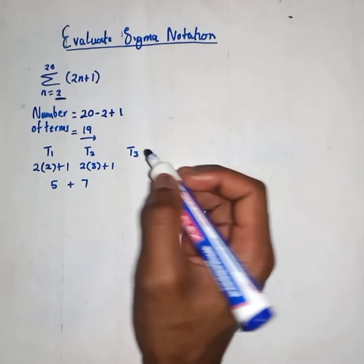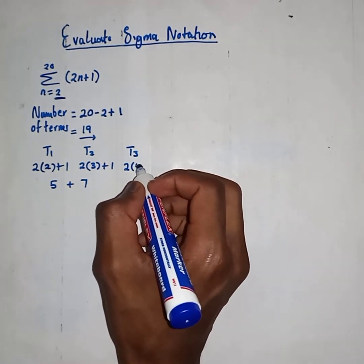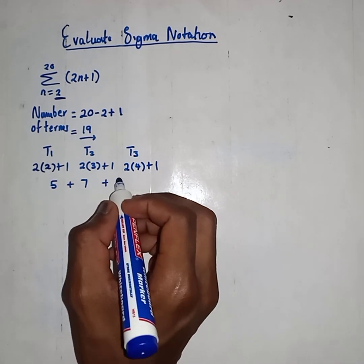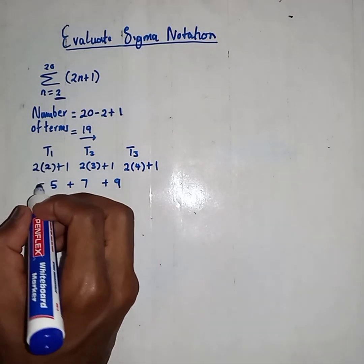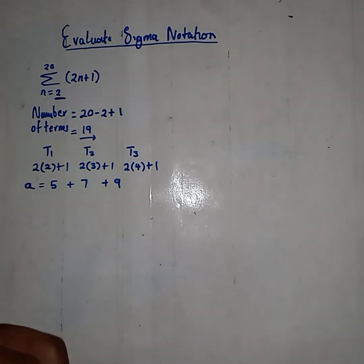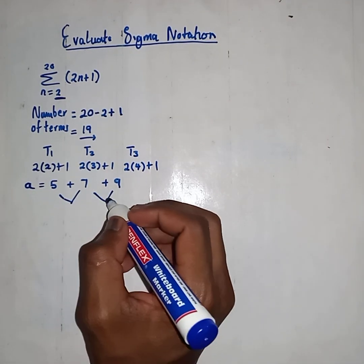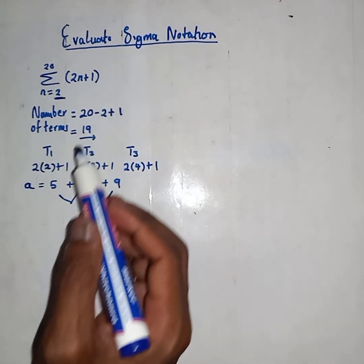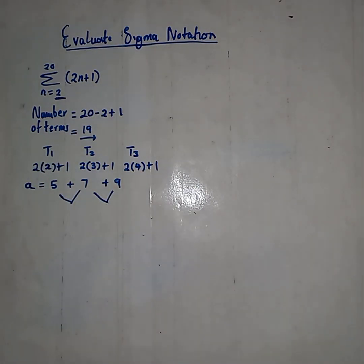Then our term 3: substitute n=4, giving 2(4)+1 = 8+1 = 9. This is our A value, term 1. Immediately after doing this, we can figure out our D value, because this is clearly an arithmetic sequence — a general formula of a linear.